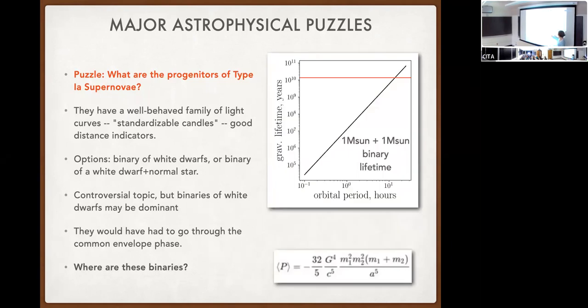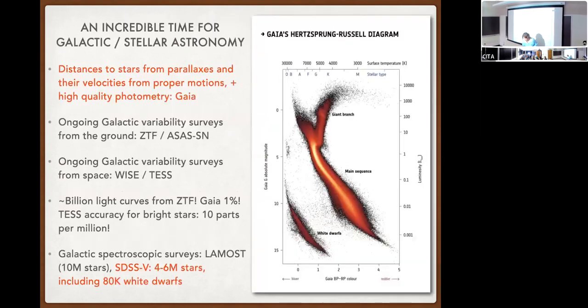The second puzzle I've already mentioned is what are the progenitors of type 1a supernovae? To remind everybody, type 1as are not standard candles, they're standardizable candles. They seem to have a very well-behaved family of light curves. The fainter ones tend to be shorter, and so there's a phenomenological model that allows you to use the duration to correct for this effect, and then estimate what the intrinsic luminosity should be. So that's the calibrated Phillips relationship. For the longest time, there's always been two hypothesized channels, either a binary of white dwarfs or one white dwarf with a main sequence companion. For the longest time, the single degenerate scenario was the leading one. But in recent years, it's been clearer and clearer that the white dwarf plus white dwarf mergers may dominate type 1as.